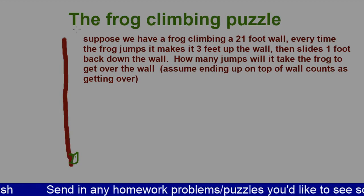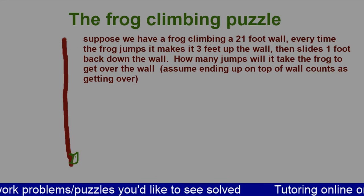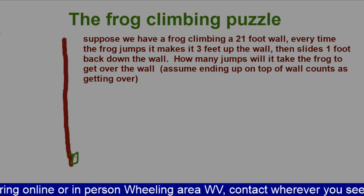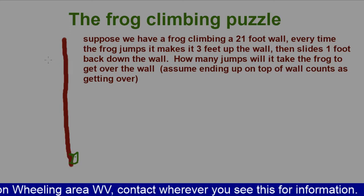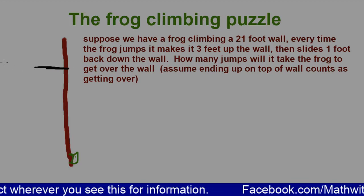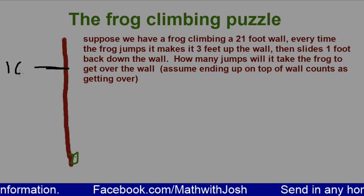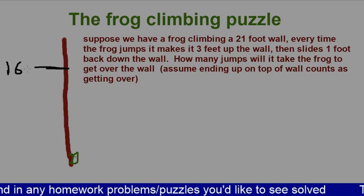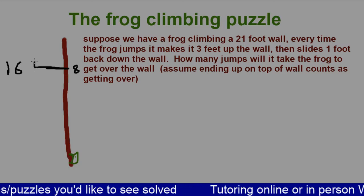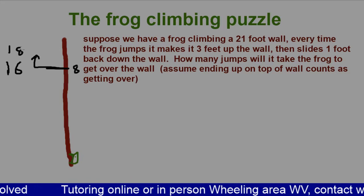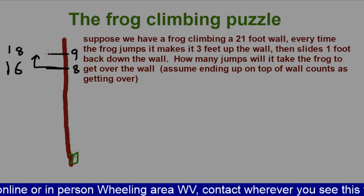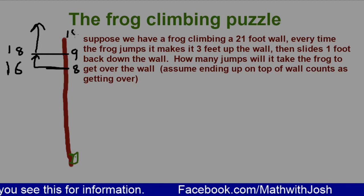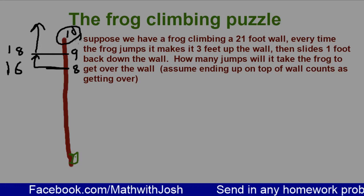The trick — the thing to catch — is that the frog jumps up the wall, then slides down. After the first eight jumps, the frog will be 16 feet up the wall. After the next jump — nine — the frog will be at 18. And this is the little detail: the tenth jump will get the frog over the top. Therefore, it only takes 10 jumps to get over the wall.